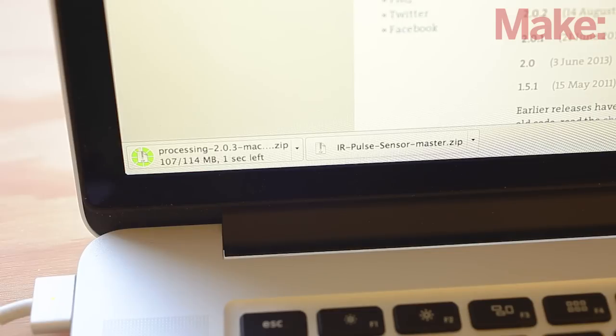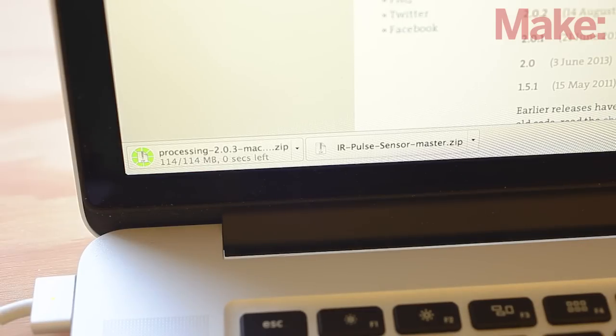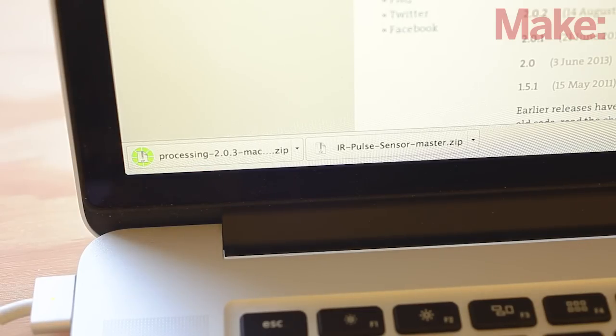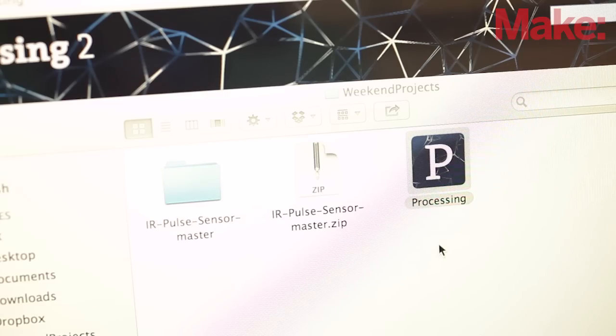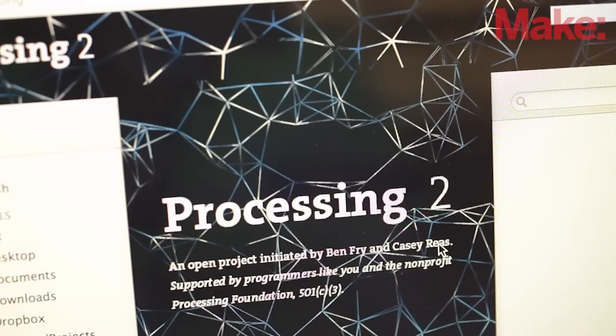Now let's turn that data into a graph. Download the visualization sketch and the latest version of processing from the link found on the project page and open it. Simply click the triangle button to run the code.